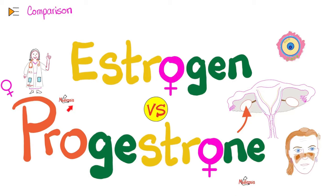Hey guys, it's Medicosis Perfectus, where medicine makes perfect sense. Let's continue our comparisons playlist. In previous videos, we compared between osteoarthritis and rheumatoid arthritis, gout and pseudogout, Duchenne and Becker muscular dystrophy, iron deficiency anemia and anemia of chronic disease, and much more. Today, we'll compare between estrogen and progesterone.